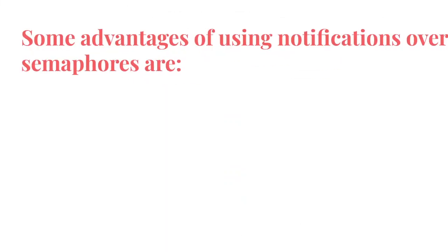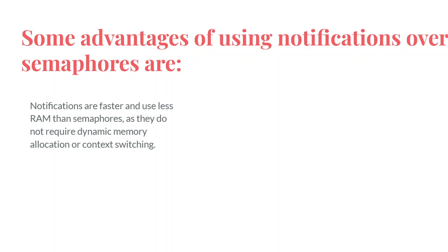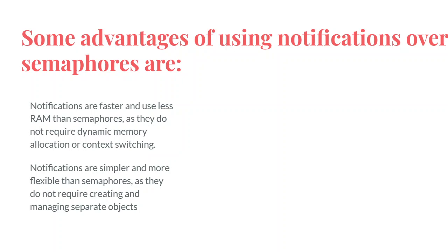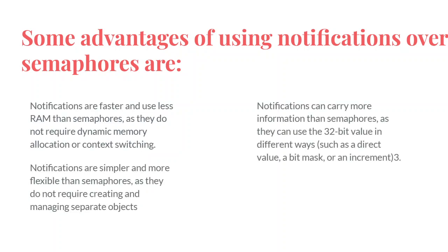Some advantages of using notifications: notifications are faster and use less RAM. This is one of the biggest advantages — they take less RAM and are faster than semaphores, as they do not require dynamic memory allocation or context switching. Notifications are simpler and more flexible than semaphores, as they do not require creating and managing separate objects. They can carry more information, using a 32-bit value in different ways such as a direct value, a bit mask, or an increment.